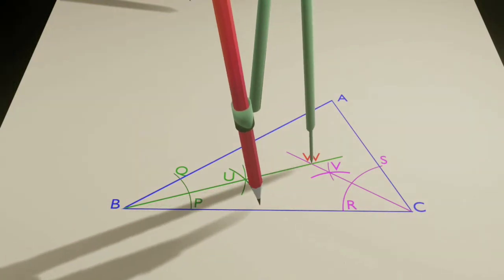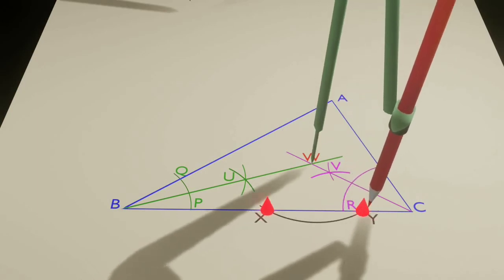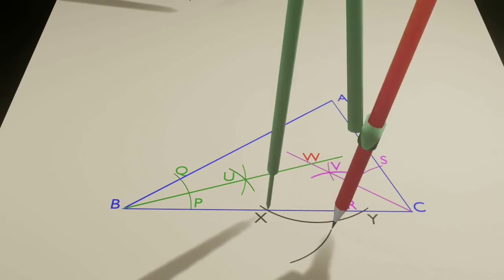These two points of intersection are named as point X and point Y. Two more arcs are drawn taking point X and point Y as centers. These two arcs join at point Z.